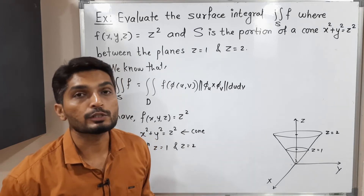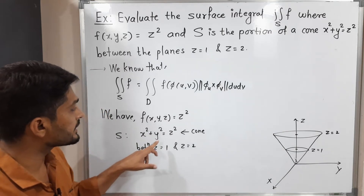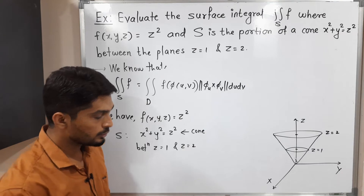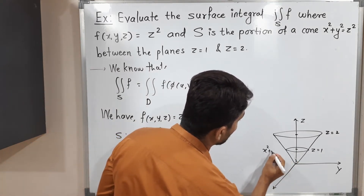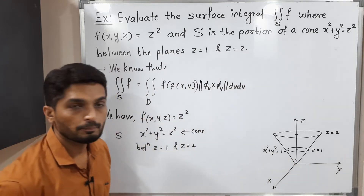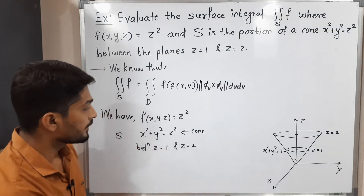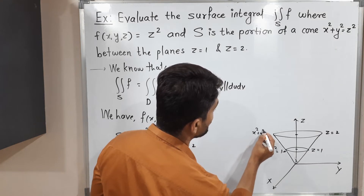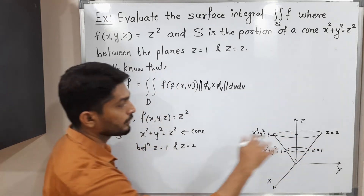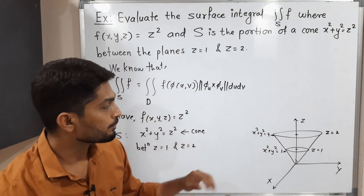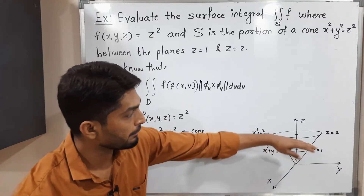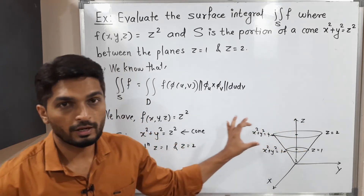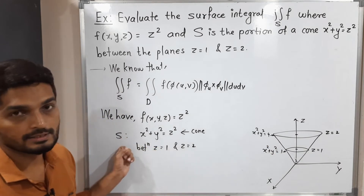Let us find the equations of the circles we get at those planes. If we put z equal to 1 into x squared plus y squared equals z squared, we get x squared plus y squared equal to 1 — a circle with radius 1. If we put z equal to 2, we get x squared plus y squared equal to 4 — a circle with radius 2. So at the bottom of this region we have a circle with radius 1, and at the top we have a circle with radius 2. This portion of the cone is our surface S.